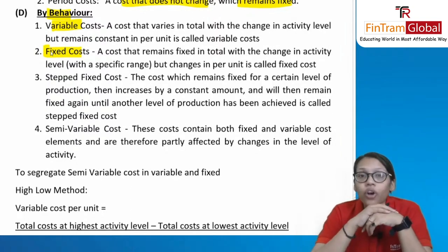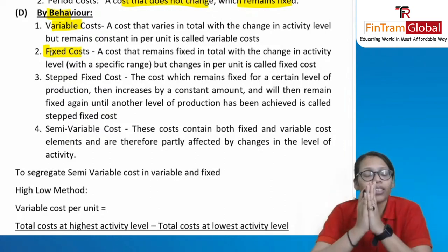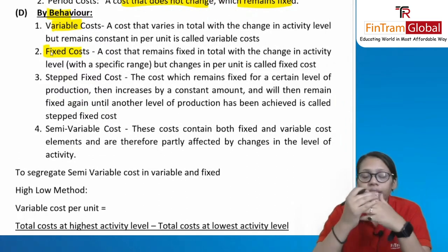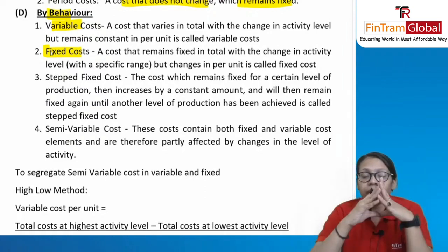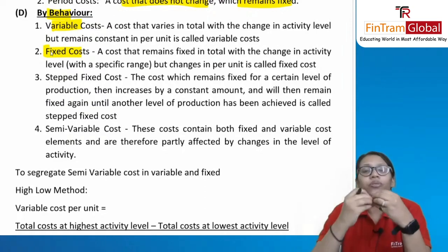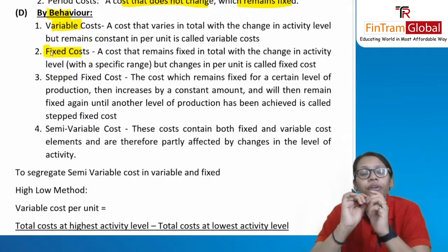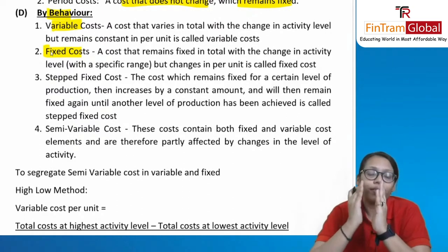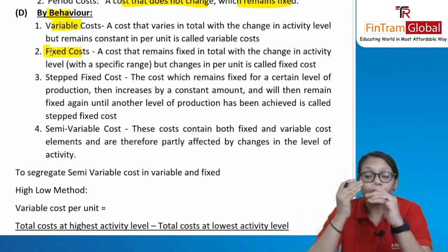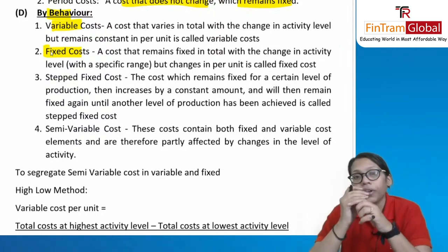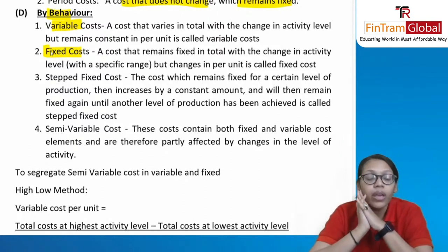Fixed cost remains constant — the total fixed cost does not change with the level of activity. For example, if rent is $200, it remains $200 whether you produce zero, 200, or 2,000 units. However, per unit fixed cost changes with the level of activity: if you produce more units, the fixed cost per unit declines.